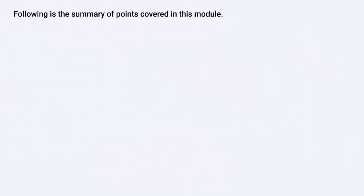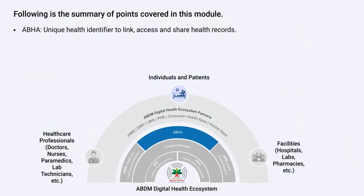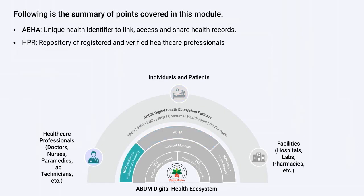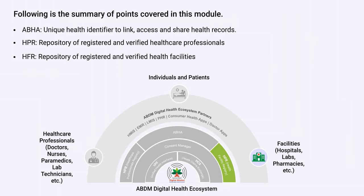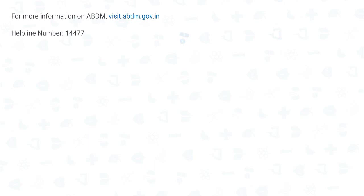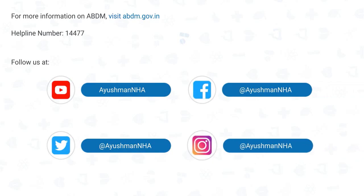Let us summarize the points covered in this module. ABHA is a unique health identifier to link, access, and share health records. HPR is the repository of registered and verified healthcare professionals on ABDM. HFR is the repository of registered and verified health facilities on ABDM, which includes hospitals, clinics, labs, pharmacies, etc. For more information on ABDM, visit the ABDM website and follow us on our social media handles.